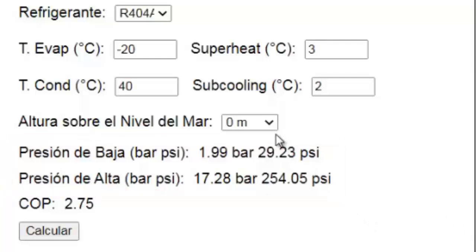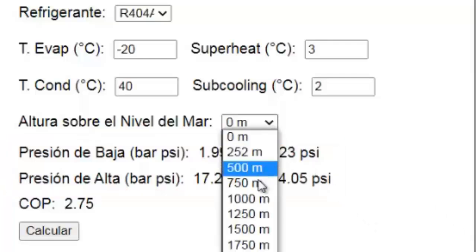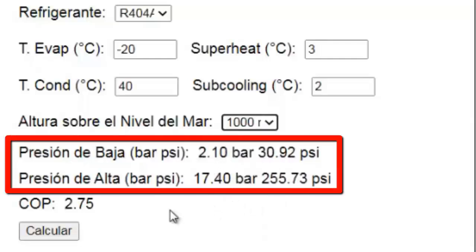However, in another location, the pressure reading on the gauge will be different. At 1,000 meters above sea level, the low and high pressures adjust to the values displayed on the screen.